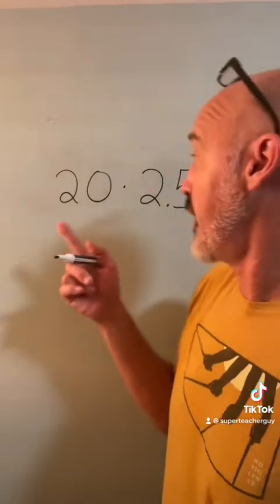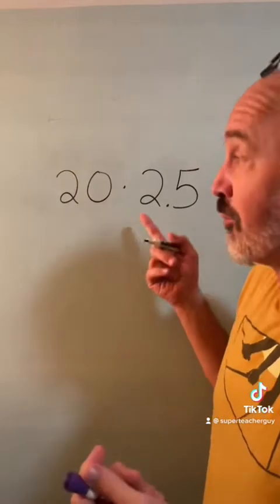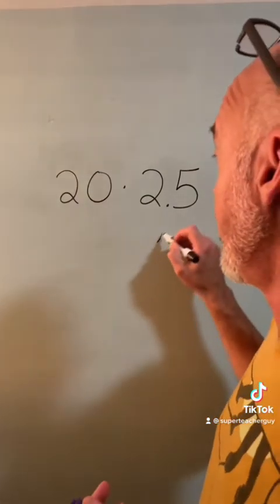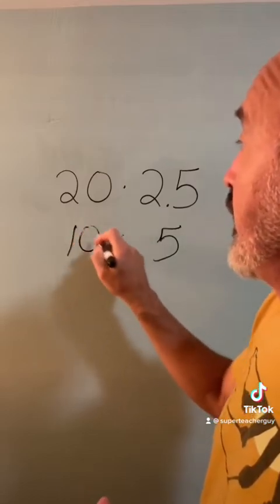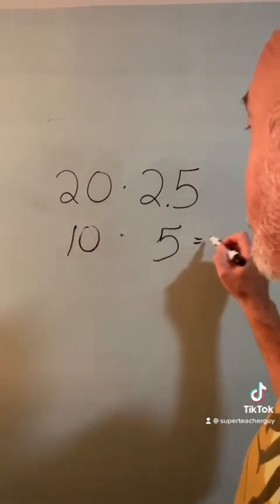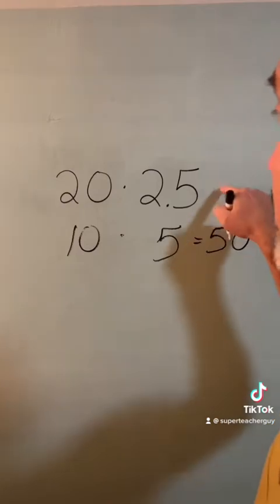If you can't do 20 times 2.5, maybe you can double 2.5 to make it 5, and then cut 20 in half to make it 10. 10 times 5 is 50. That's the same answer.